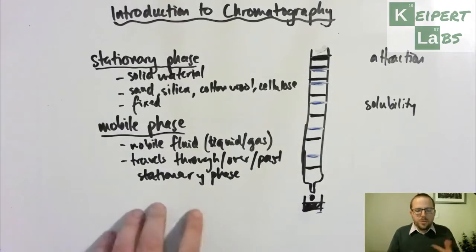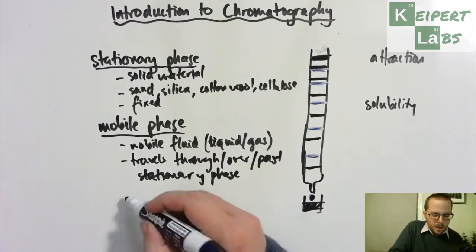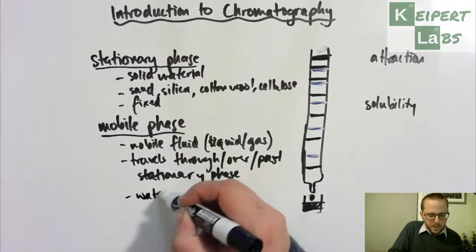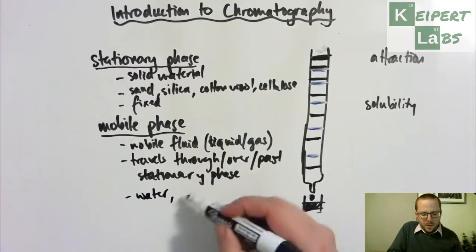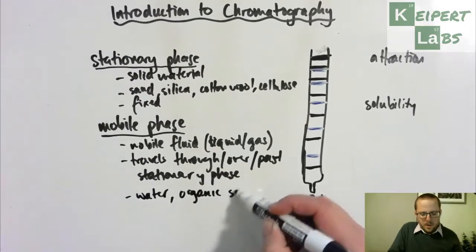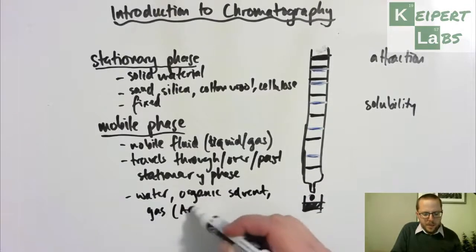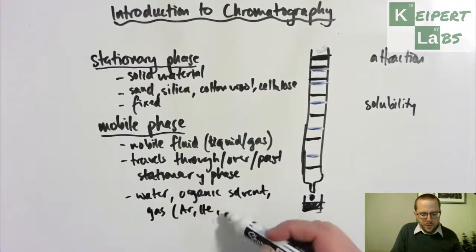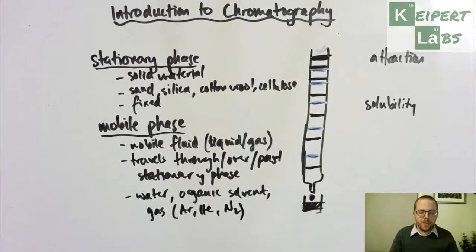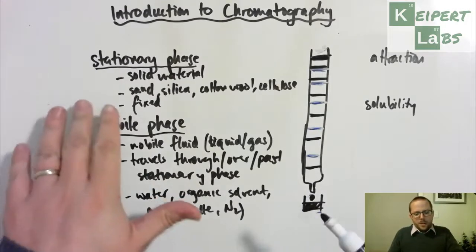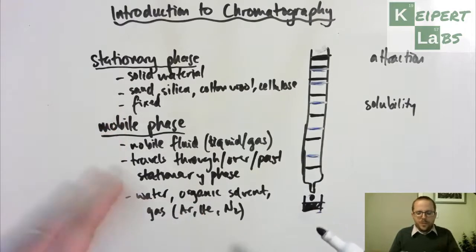So this mobile phase, which travels through, over, past the stationary phase, might be water-based, it might be an organic solvent, or it could be a gas like argon or helium or nitrogen gas. We'll see, we're going to talk about gas chromatography as a key component in forensics. So the key idea here is that the stationary phase is a solid kind of fixed material, and then we have a mobile phase which travels past it.